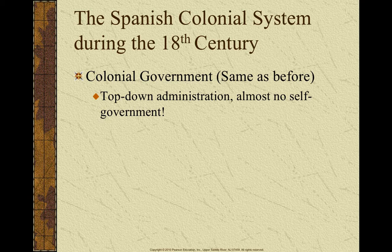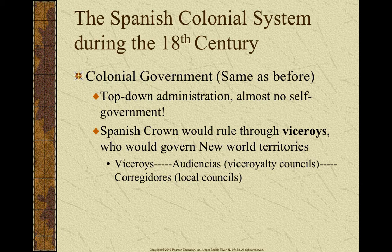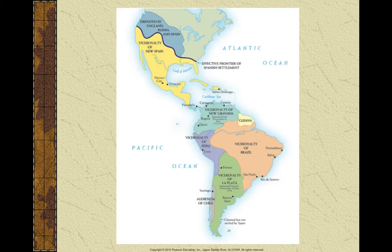There was no self-government in the colonial government of Spain. The Spanish crown ruled through viceroys, which were kind of like governors. The viceroy would report directly to the crown. Below the viceroy, you had these councils, these audiencias, which would report to the viceroy. And then you had these local governments, these local councils, the corregadores, who would report to the audiencias. So you had king/queen, viceroy, audiencias, corregadores — that was how their government was divided up colonially.